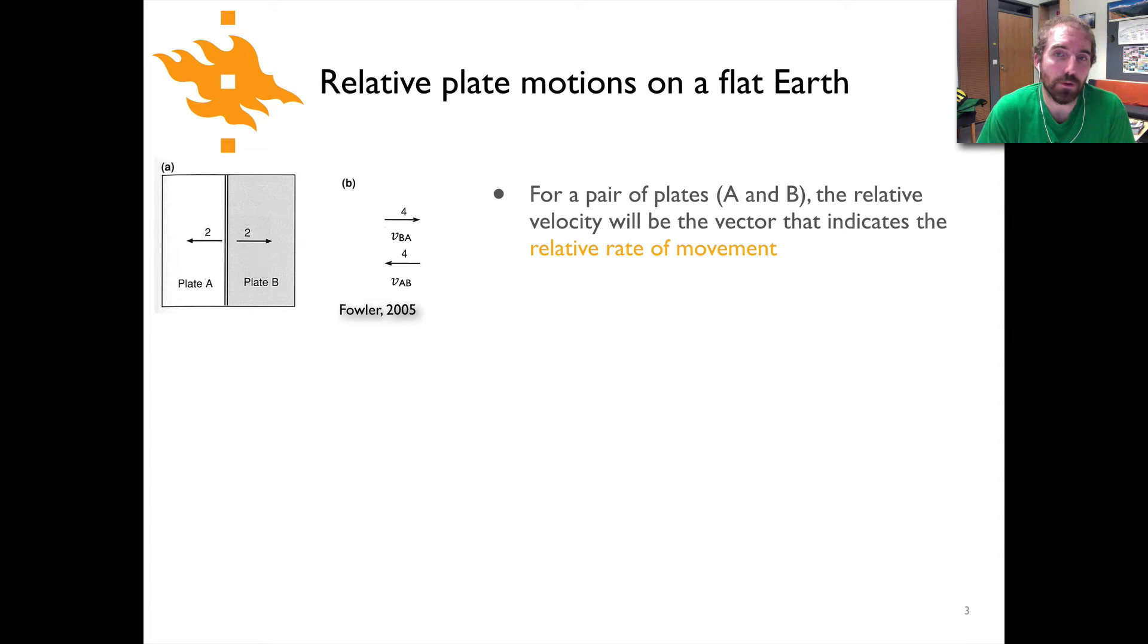Here's our simple approximation of a flat earth with two plates. On the left side we have plate A and plate B that are separated by a spreading ridge that's spreading at a rate of two on either side of the spreading ridge. On the right side we have velocity vectors VAB and VBA that are different ways we can describe the relative rate of movement of plate B with respect to plate A.